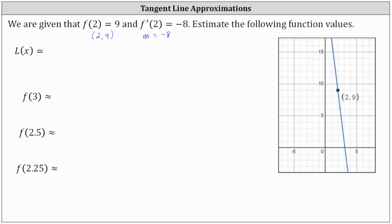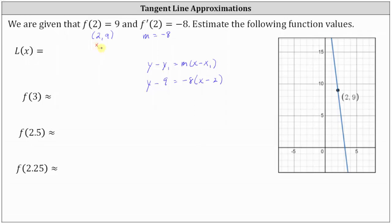Let's find the equation of the tangent line in point-slope form, which is y minus y1 equals m times the quantity x minus x1, where m is the slope of the line and (x1, y1) is any point on the line. In our case, the equation is y minus 9 equals negative 8 times the quantity x minus 2, where m is negative 8 and the point (2, 9) gives us the values for x1 and y1.